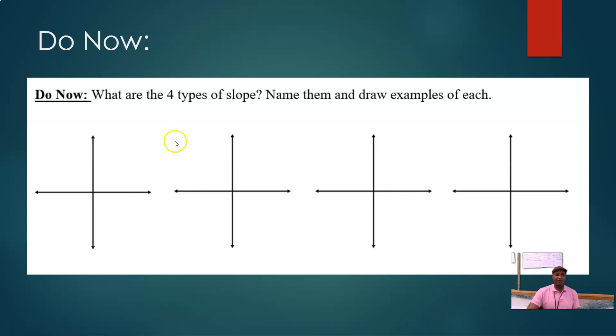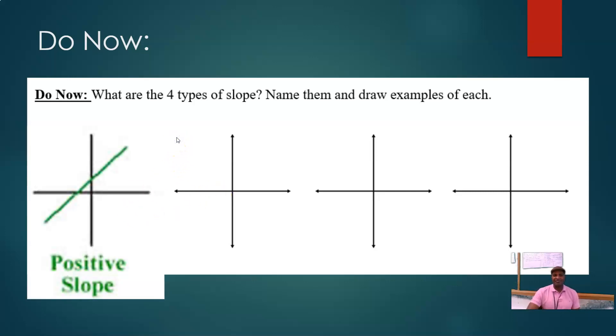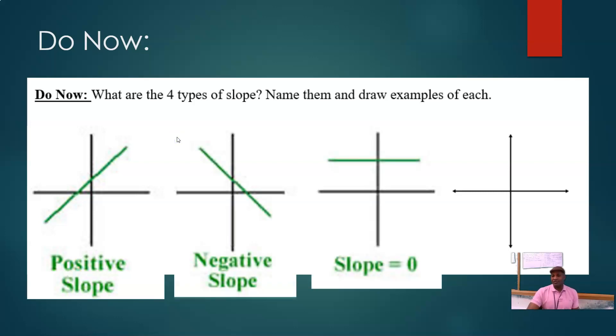The four types of slopes are positive slope, negative slope, zero slope or horizontal slope, and undefined slope.